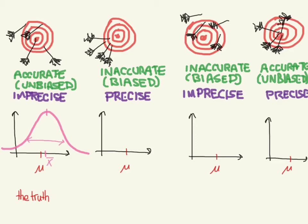Now let's look at the inaccurate and precise case. This one has a mean that's way over here — it's far away — however, its dispersion is very small, so you can see that it's very precise around this mean. But this mean is far from the truth, so we say that it is inaccurate or biased.